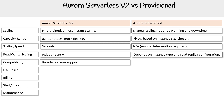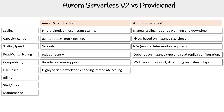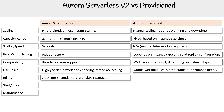For Aurora Serverless v2, it's compatible with broader version support. For provisioned, it has wide version support depending on the instance type. The use case for serverless is highly variable workloads needing immediate scaling. For provisioned, it suits stable workloads with predictable performance needs. Billing for serverless is based on ACUs per second — more granular — plus storage. For Aurora Provisioned, it's instance hours plus storage.